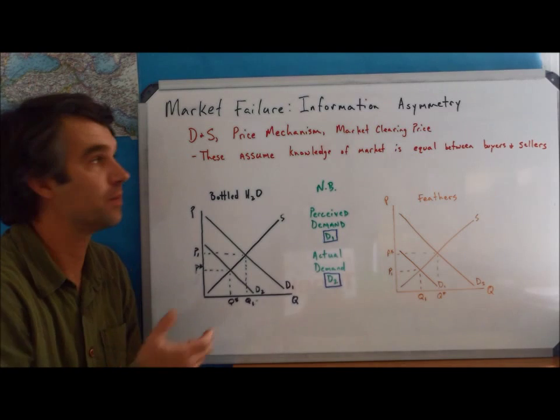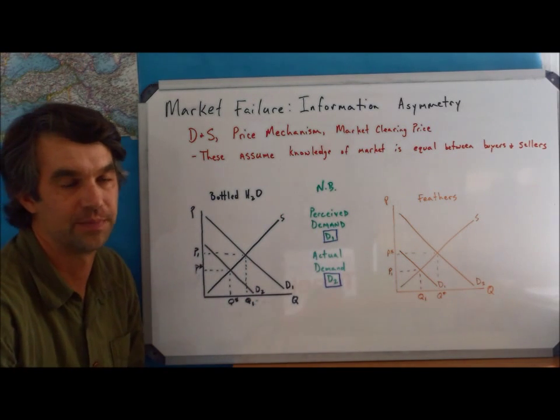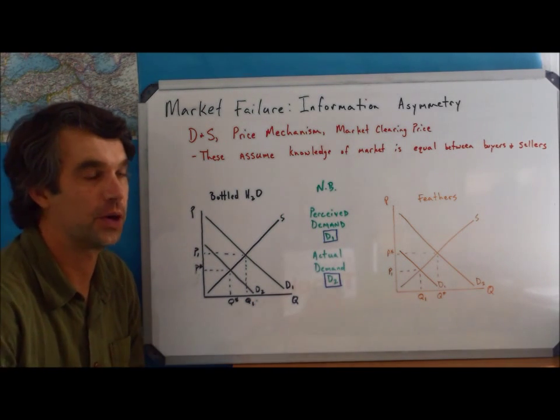Our next topic in market failure is looking at information asymmetry. This is a pretty easy topic. We'll cover it real quickly.